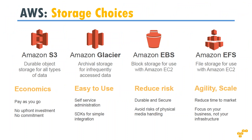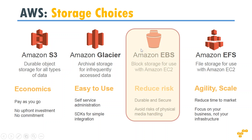Let's see where exactly we are sitting in the storage choices. We spoke about the first group, Amazon S3, which is durable object storage, and we also spoke about Amazon Glacier for archival storage for infrequently accessed data. We also saw how to move data from S3 to Glacier using lifecycle policies. Now we are going to see Amazon EBS, which is the block store for AWS EC2, for anything you want to do at a block level.